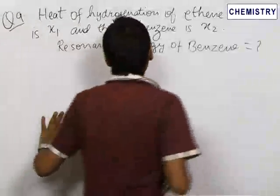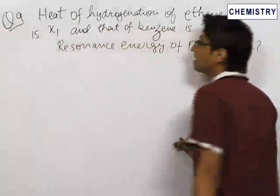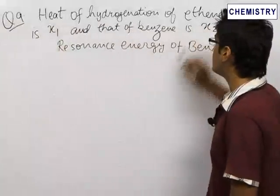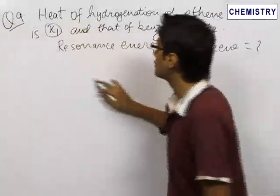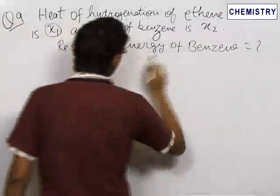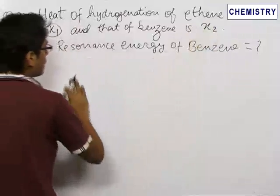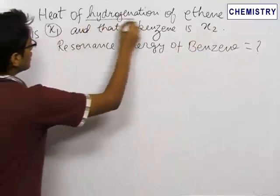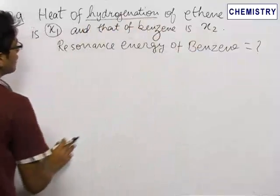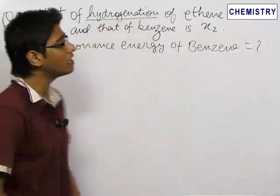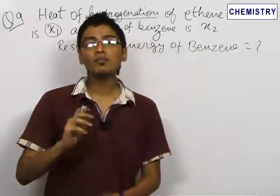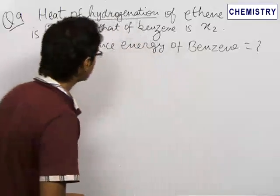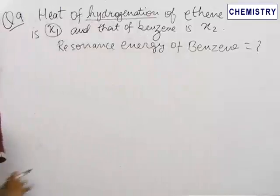In our next problem, which is a very interesting and conceptual problem, we are given that the heat of hydrogenation of ethene is x1 and that of benzene is x2, and we need to find the resonance energy of benzene. Now, what is heat of hydrogenation of an alkene? It is the amount of heat involved when one mole of hydrogen is added across the double bond of that alkene to convert it into an alkane.